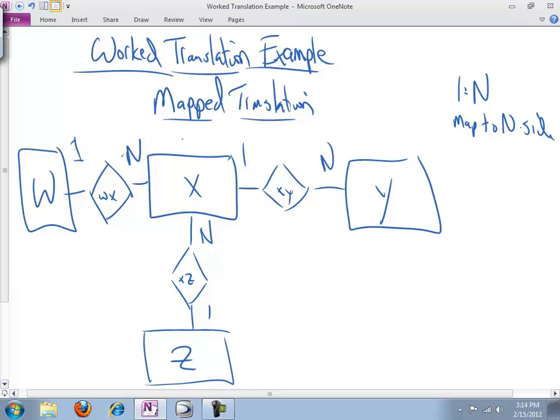We say, okay, we have a one to many relationship here. So, we will include the WX relationship in the X entity. We have a one to many relationship here. And the N side is the X. So, we will include it there as well. And then finally, we have a one to many relationship here between X and Y. Although X is the one side, not the many side.